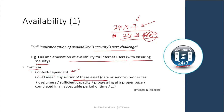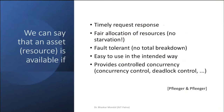Availability can mean any subset of properties like usefulness, sufficient capacity, processing at proper place, and completion in an acceptable time period. A resource or service is available if timely request responses are given, there is fair allocation of resources with no starvation, and there is a level of fault tolerance so small faults don't cause a system breakdown.